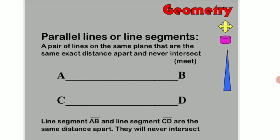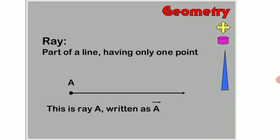They are known as parallel lines. Here children, AB and CD are two parallel lines and the line segment AB and line segment CD are the same distance apart. They will never intersect or never meet each other.